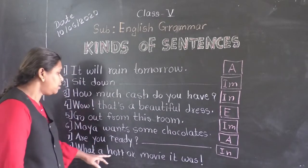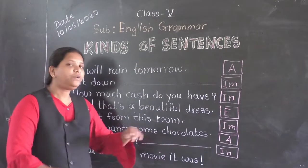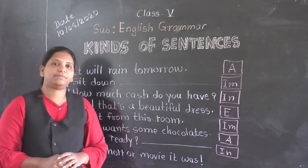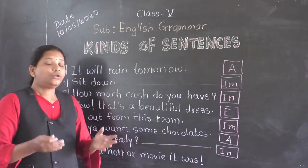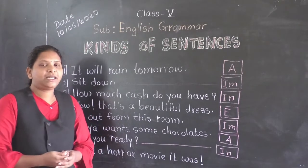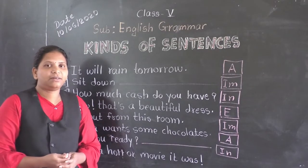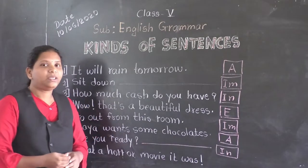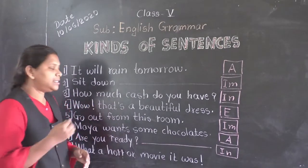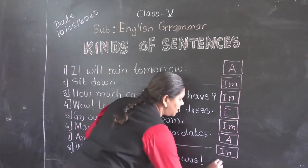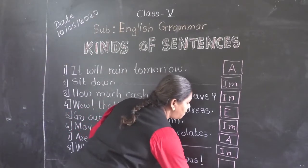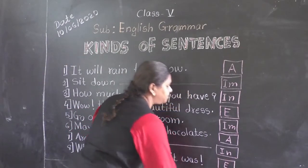And the last sentence: 'What a horror movie it was!' Okay? So which type of sentence do you think this is? Yes, this is an exclamatory sentence, so we will write here E.